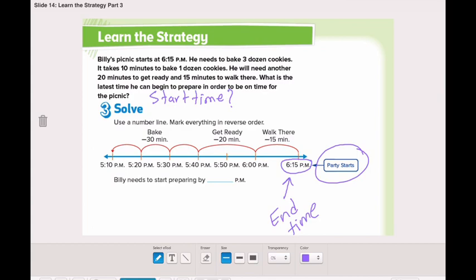Let's start by removing step by step. He needs, we said, we know that he has to bake, get ready, and walk there. We will start by the 15 minutes walking there. We will remove 15 minutes from the time. So, 15 minutes, take away, it will be, what is the time now?